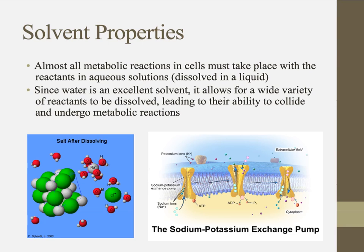Here's a great example — the sodium-potassium pump, which is important to a lot of cells, specifically nerve cells. In order to create a nervous signal, nerve cells have to pump out sodium ions from their cell and create a very high concentration gradient. In order for this to happen, the sodium can't be attached to other molecules — it needs to be dissolved in solution. The fluid inside the cell and the extracellular fluid are both primarily made up of water, so we can keep those solutes in solution and they can be an important part of metabolic reactions.